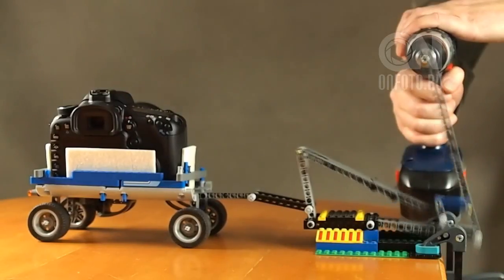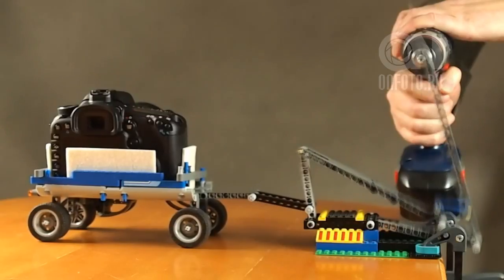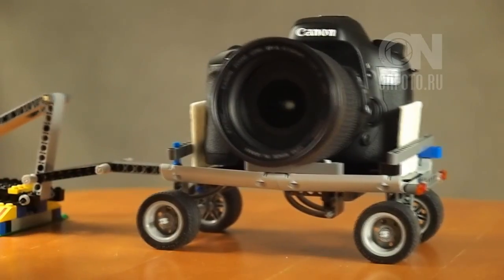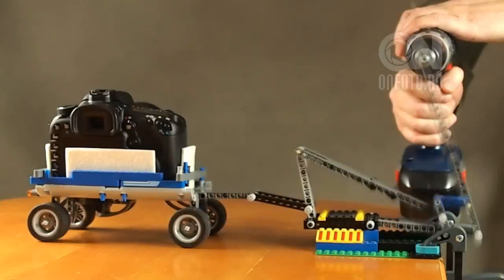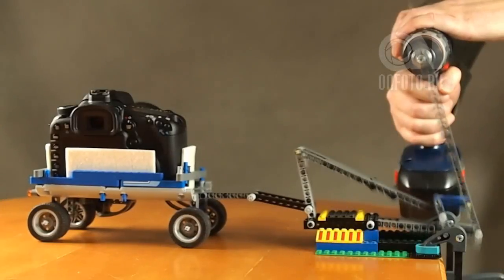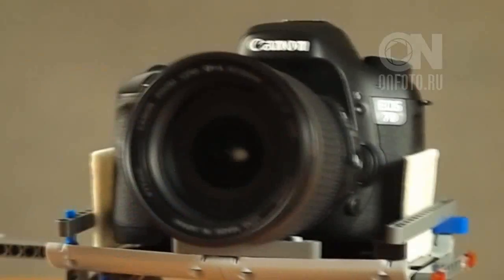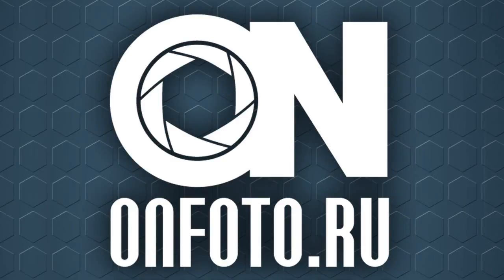Frankly speaking, our vibrastand looks not very serious. However, it provides the main thing – reproducible impact – the same from shot to shot. And also gives us possibility to change the strength of vibration for the next series of shots. You can find results of our testing at www.onphoto.ru